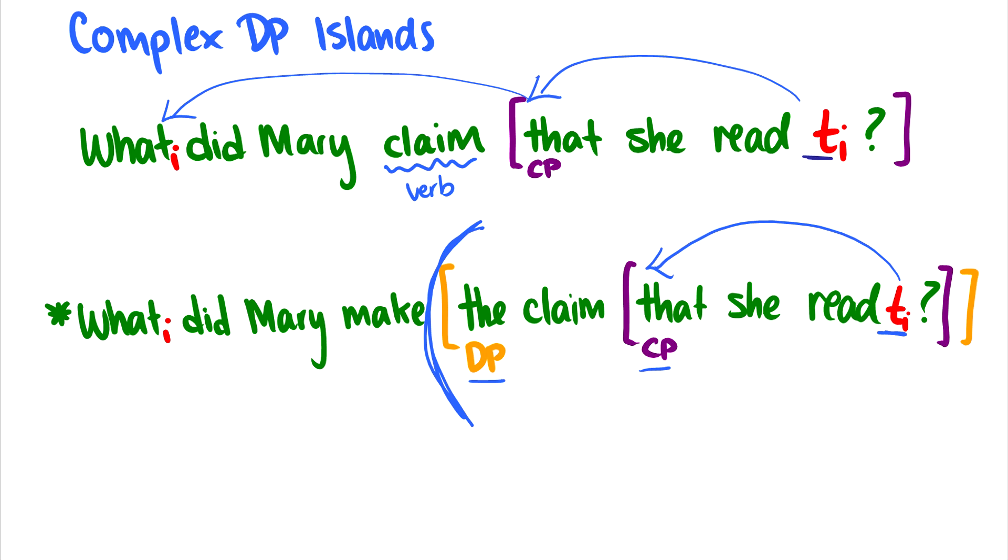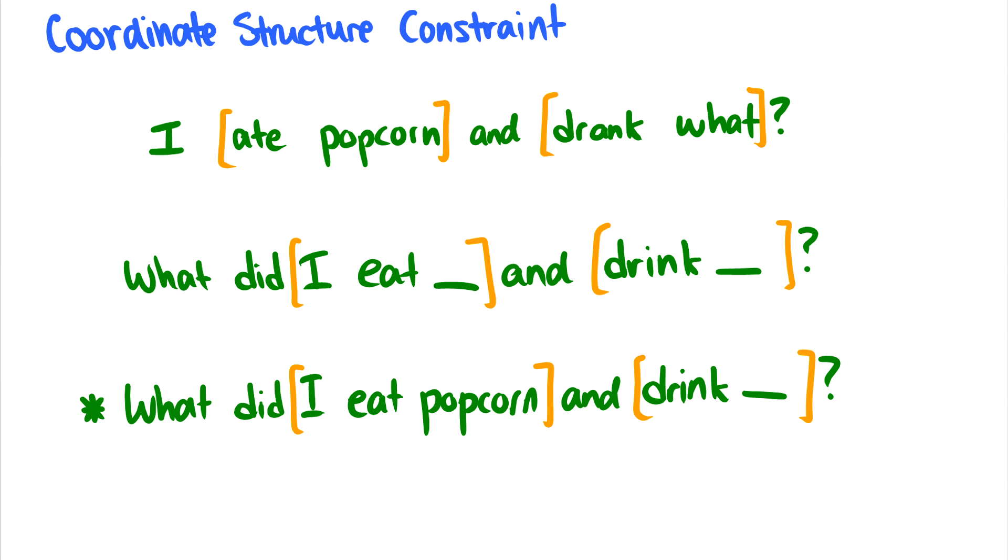All right, normally you probably won't discuss these in a typical Syntax 1 course, specifically the complex DP islands, but just in case you do encounter them, this is the general explanation that's given. Finally, one of the more intuitive ones, and I think that are at least probably the easiest to understand, are the coordinate structure constraint. And this isn't an island, yeah, it's more of a constraint, but I think it's interesting to include it here anyway. So we can say something like...